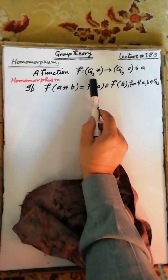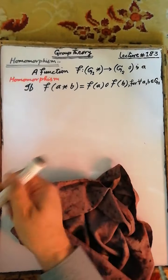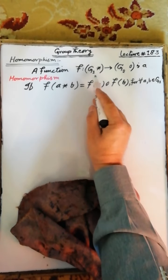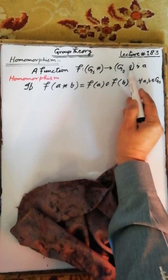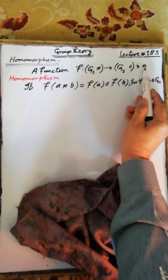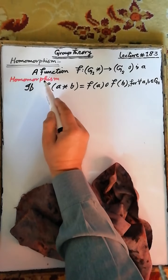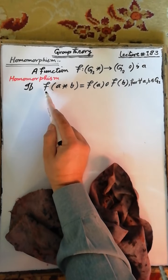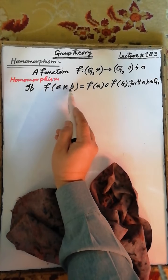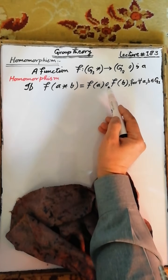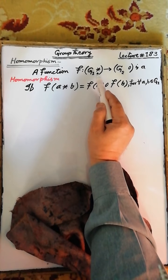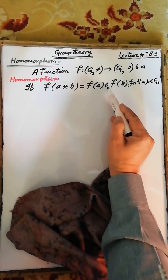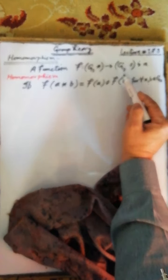A homomorphism is a function f from a group G1, where G1 is a group with respect to the binary operation star, to a group G2, where G2 is a group with respect to the binary operation circle, such that f(a ★ b) = f(a) ∘ f(b), where star is a binary operation on G1 and circle is a binary operation on G2.